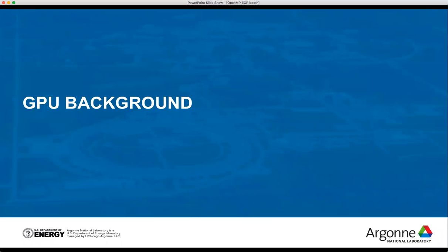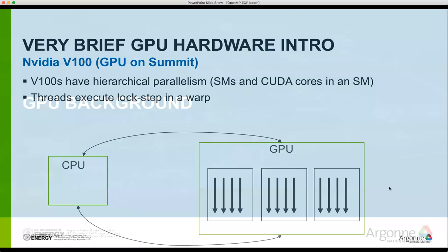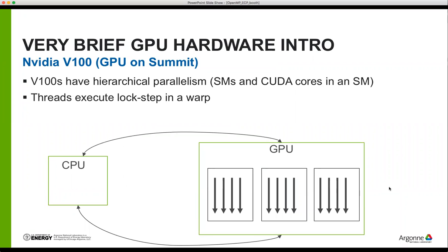I wanted to give some GPU background to help motivate some of the porting we did, using a V100 as a specific example. GPUs are organized hierarchically, with different levels defined by shared resources. In V100s, there are streaming multiprocessors or SMs, and CUDA cores inside each SM. Inside each SM, the base unit of execution is the warp — 32 threads executing in lockstep on CUDA cores. If threads in a warp do different things, there's thread divergence and less efficient use of the hardware.